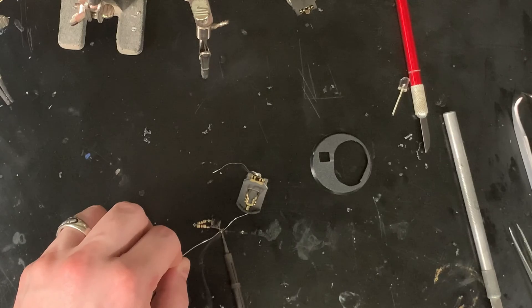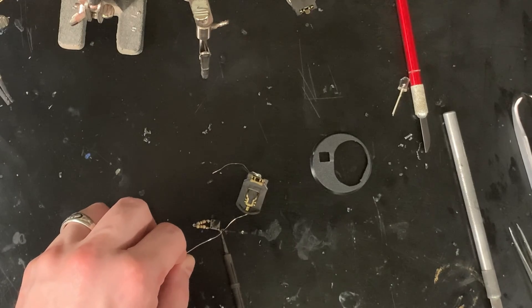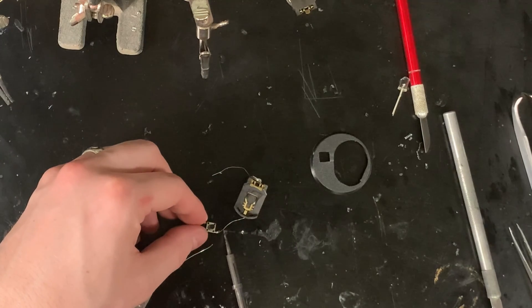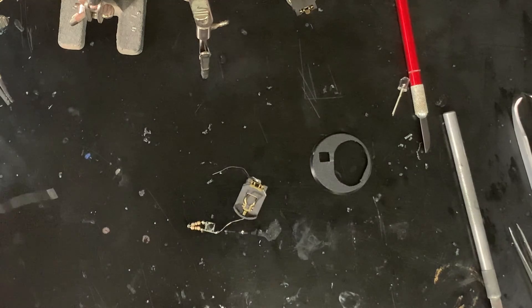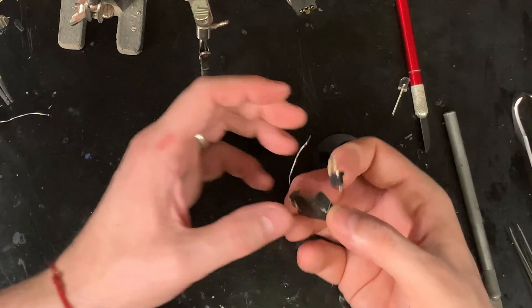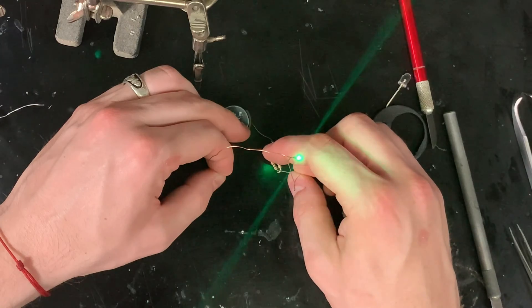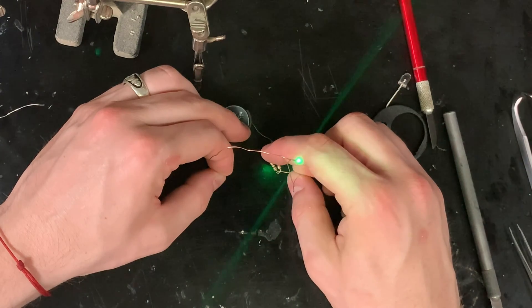So I have the positive lead soldered to the on-off switch. And the tactile switch is soldered to the negative side of this. So we're going to put an LED on here. Make sure everything works before we go any further. And it looks like that's working just fine.